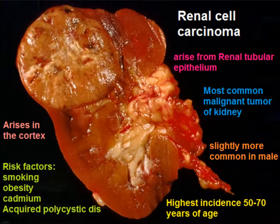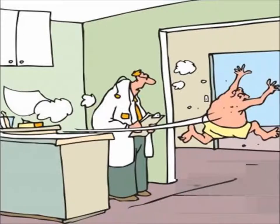Renal cell carcinoma is the most common malignant tumor. It arises from renal tubular epithelium, is slightly more common in males, with highest incidence at 50 to 70 years of age. It arises in the cortex. Risk factors include smoking, obesity, cadmium, and acquired polycystic disease — seen in patients who are on renal dialysis.